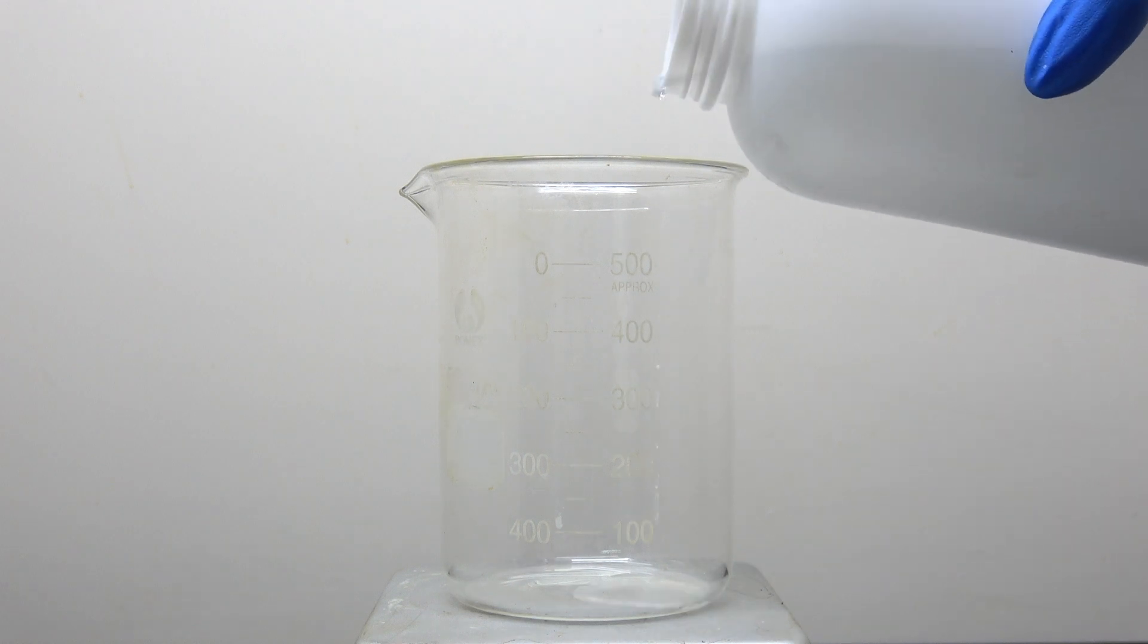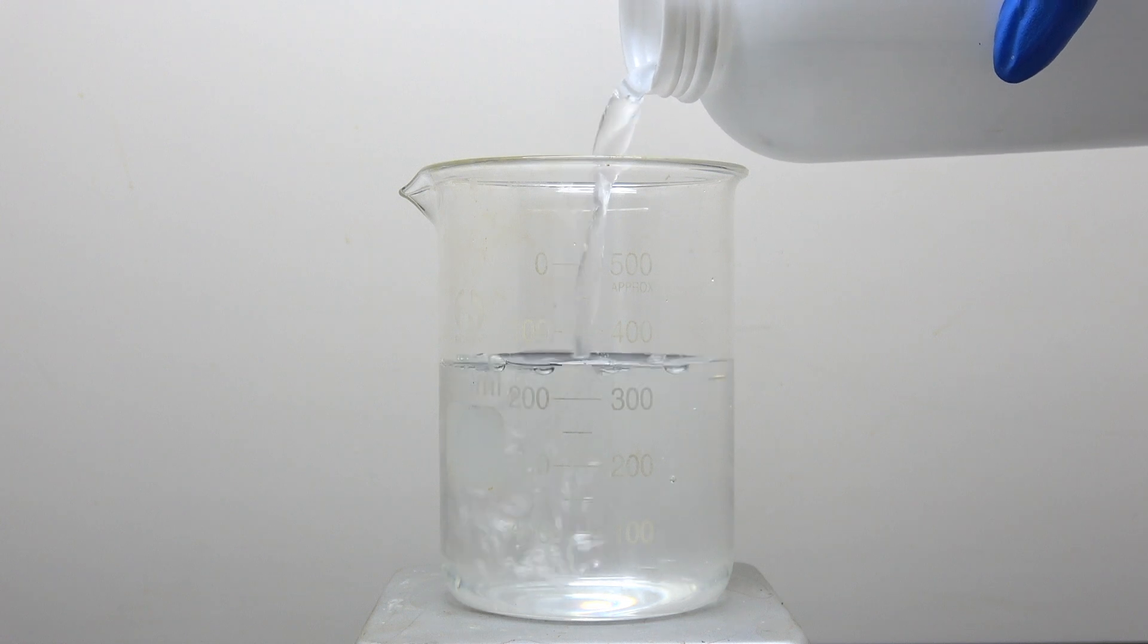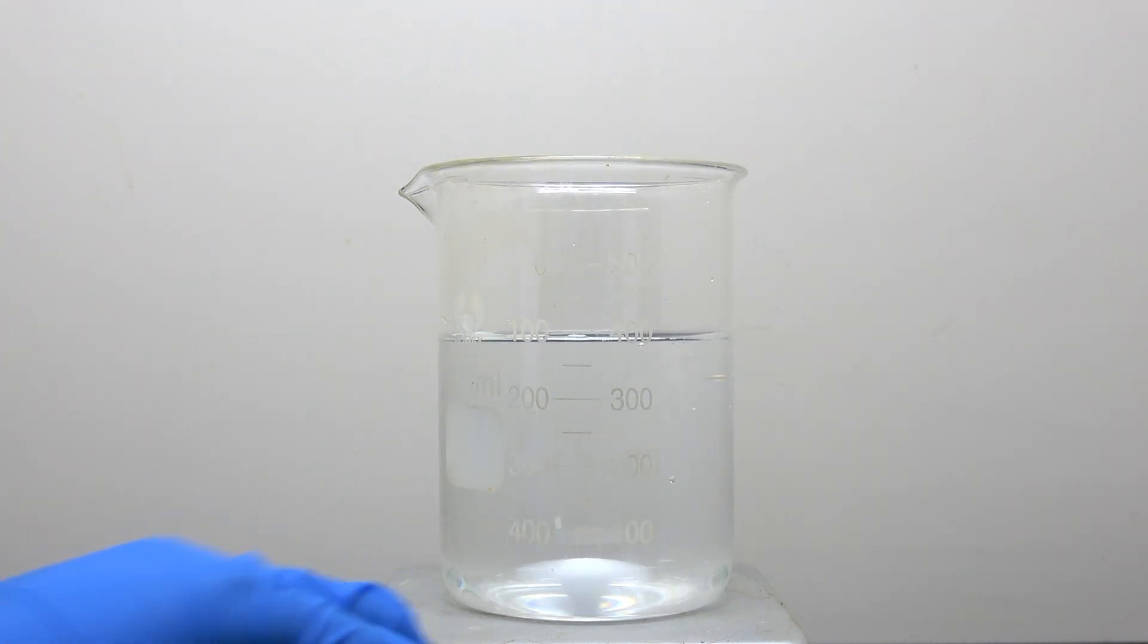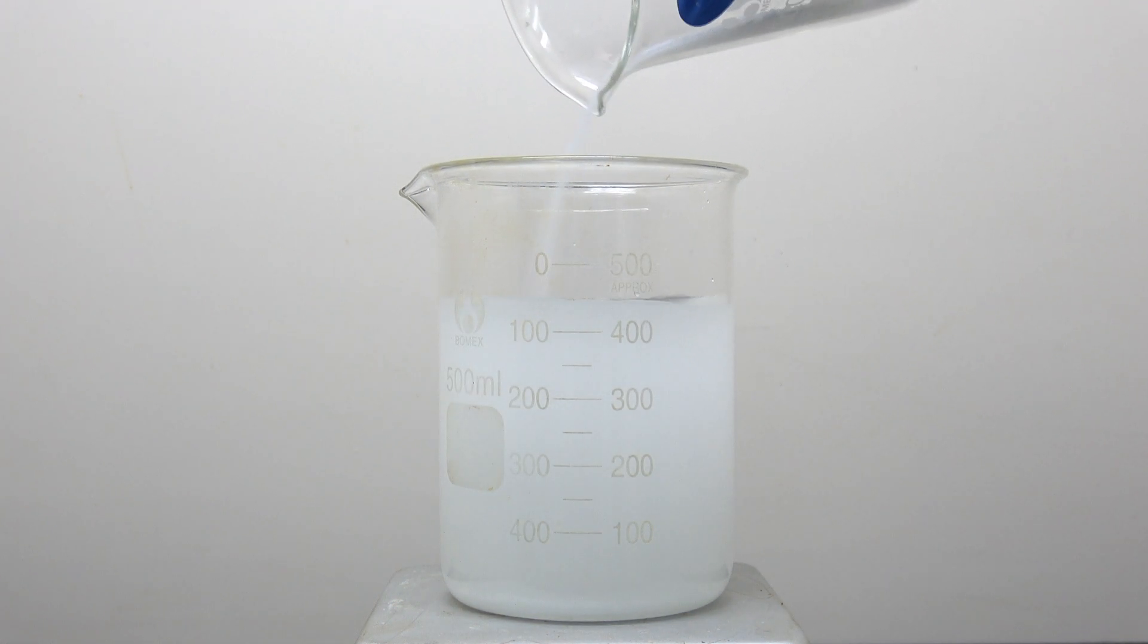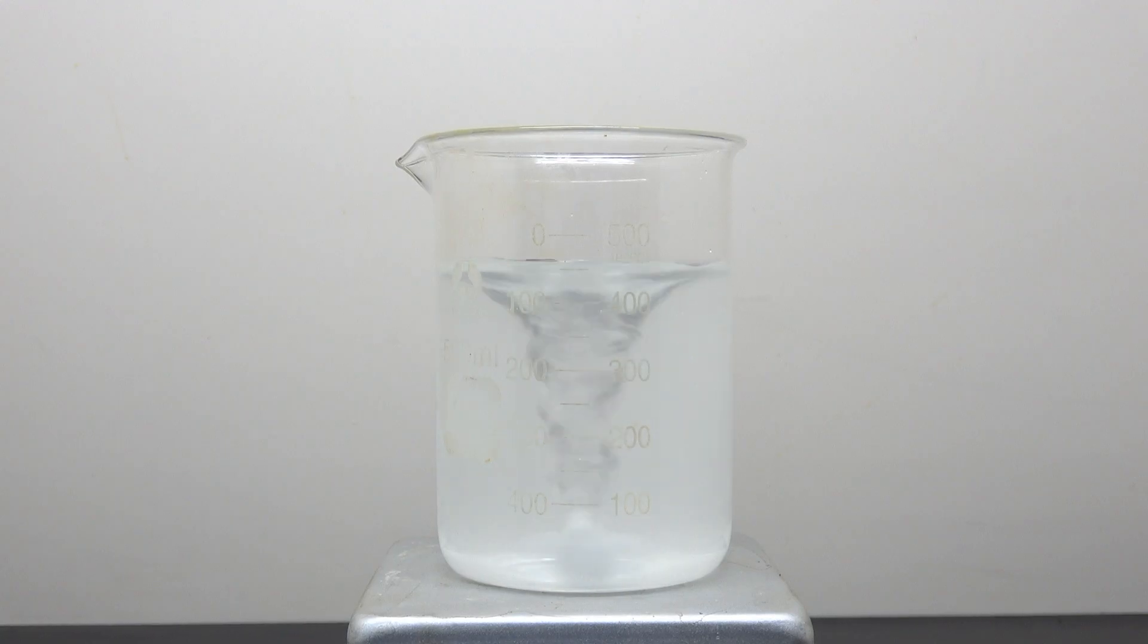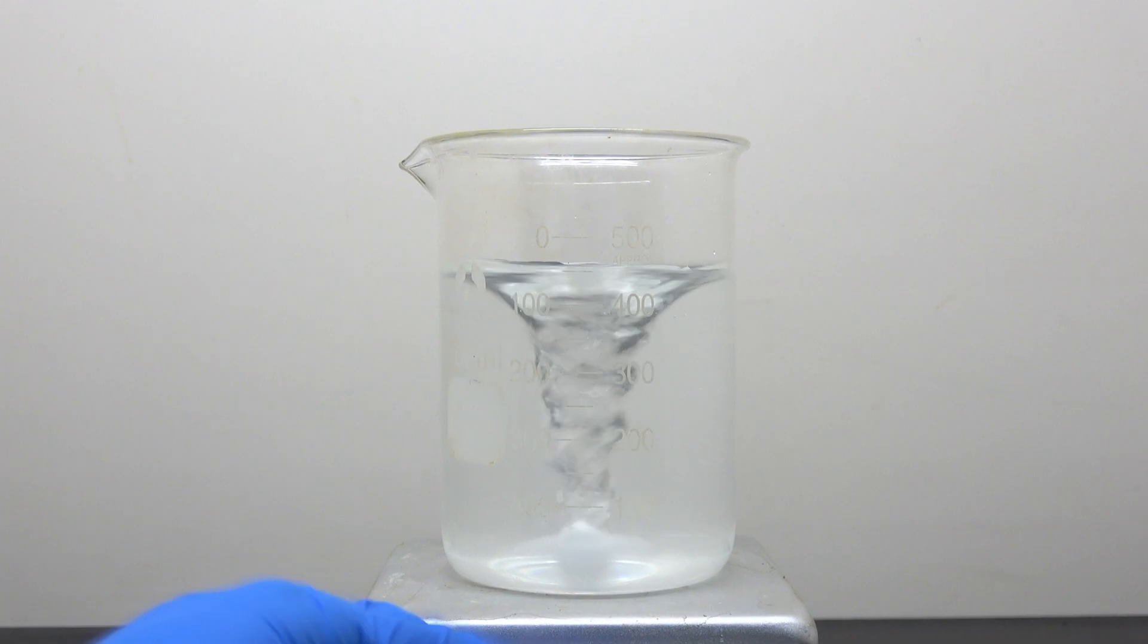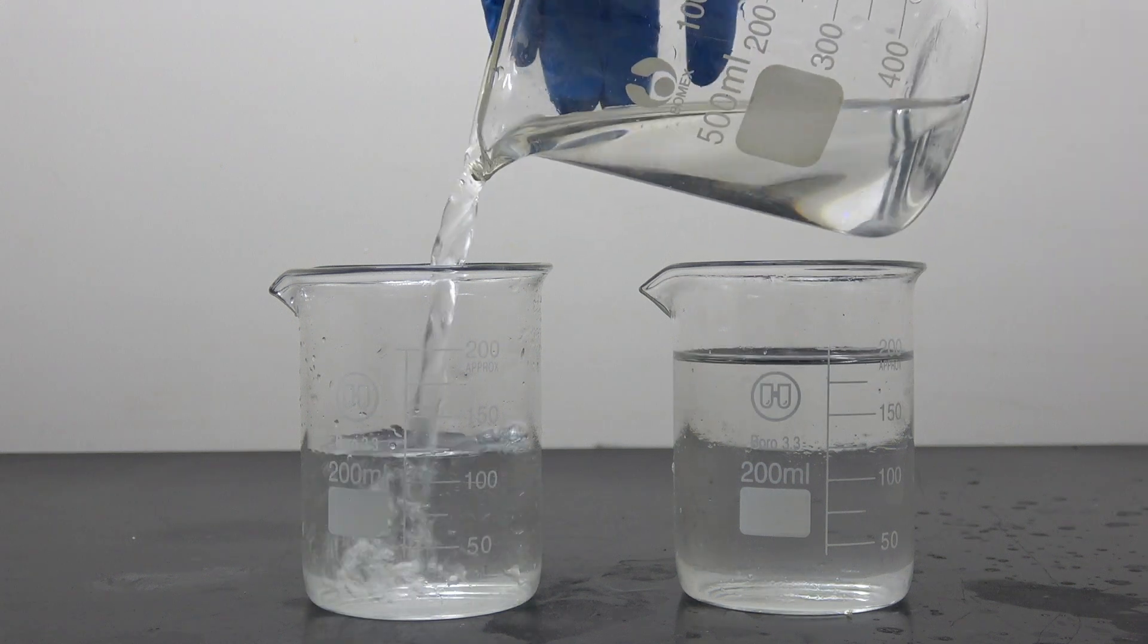To start things off, 400 milliliters of distilled water is poured into a beaker. Then I drop in a stir bar and turn on the stirring. Then 100 grams of sodium bromide is gradually added into the water. Doing it this way reduces the likelihood of trapping the stir bar. After everything dissolved, I turn off the stirring and distribute the solution into two smaller beakers.